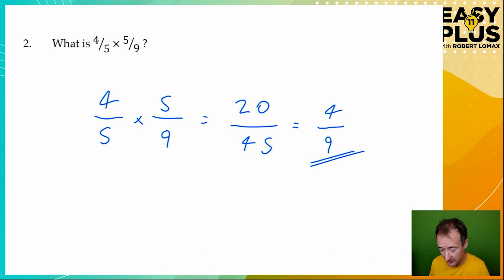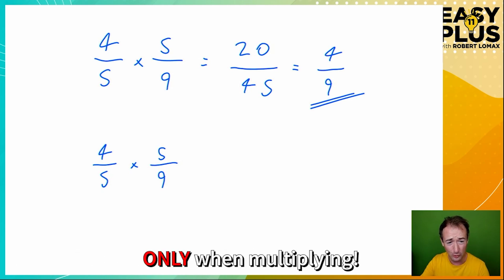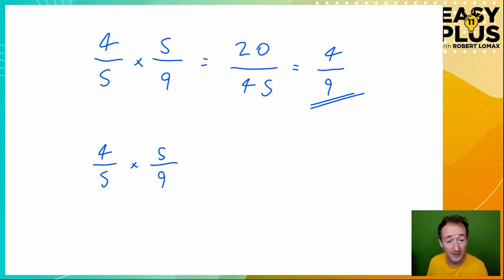But there's something else that you could bear in mind here. Let's start again. When you're multiplying fractions, and only when you're multiplying, never when you're adding or subtracting or dividing, you can actually simplify in the first place by cancelling diagonally. So five and five can both be divided by five. Five divided by five is one, and five divided by five is one. So now we've got four over one times one over nine. Four times one is four, and one times nine is nine. So this gets us to the answer much more simply. This is a really useful shortcut, but remember that you can only use it when you're multiplying fractions together.